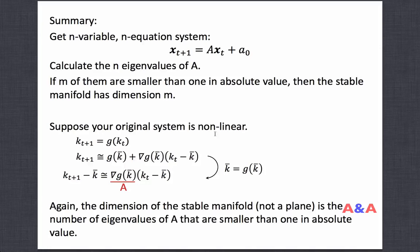Sometimes your system is non-linear: k_{t+1} = g(k_t), where g is some non-linear function. Then you need linearization — locally linearize the system around the steady state of interest. The date-(t+1) deviation is approximately equal to the Jacobian of g evaluated at that steady state times the date-t deviation. You call this Jacobian matrix A and do the same thing. The stable manifold is no longer a plane because the original system is non-linear, so the stable manifold is a little curved.